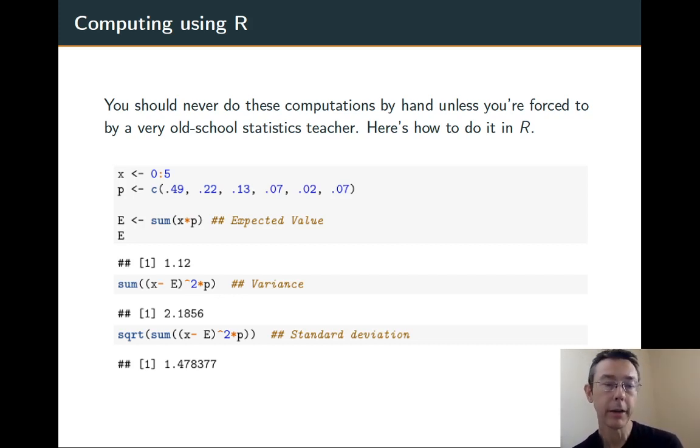I'm doing a similar thing with variance. I'm going to take the different X values and subtract off the expected value, square it, multiply by the probability, add all that up. So, the variance here with technology, 2.1856. Finally, to get the standard deviation, I just take the square root of that and we get the same answer as before, as you would expect.